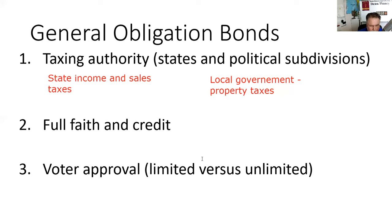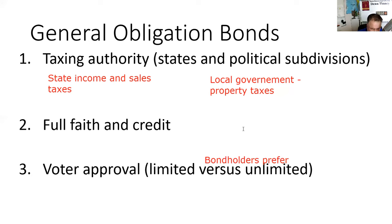From a bondholder's perspective, we would prefer that the bonds we're holding are unlimited. In other words, if two mils doesn't get it done, the municipality charges three mils, four mils — whatever is necessary.